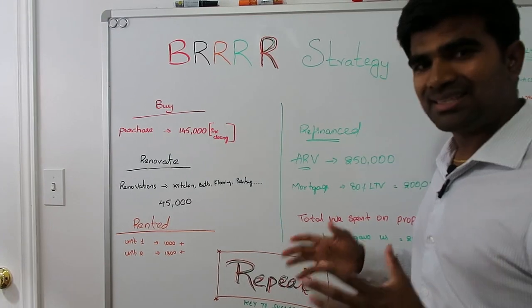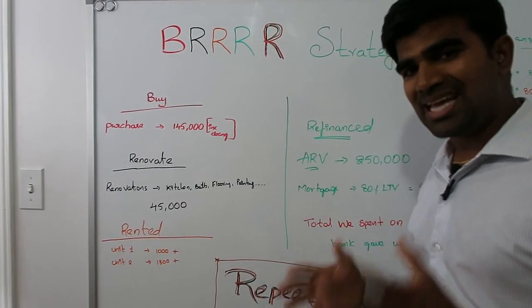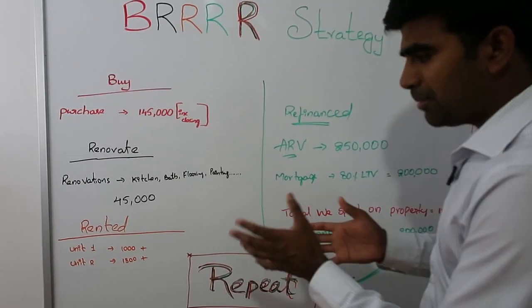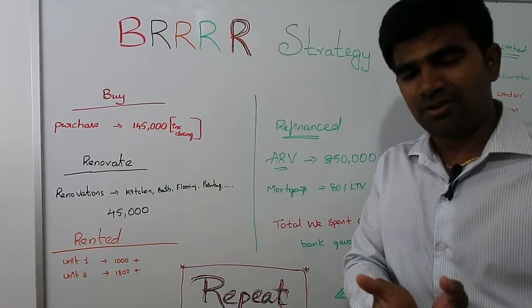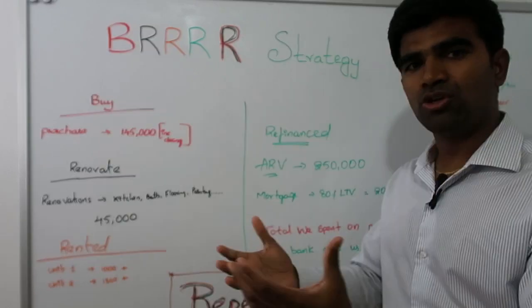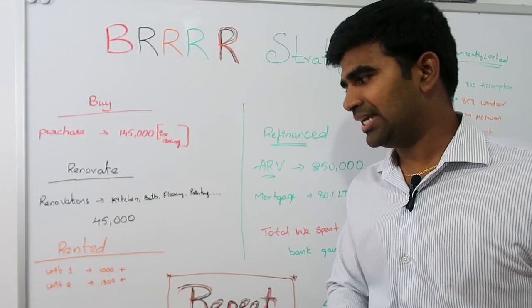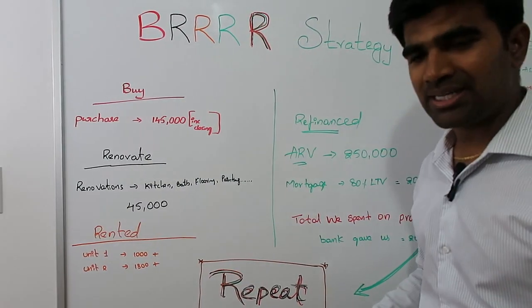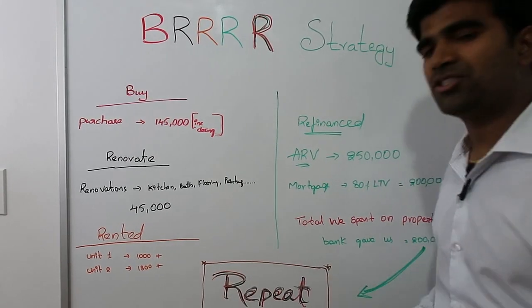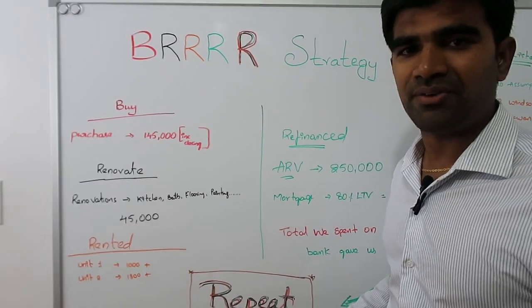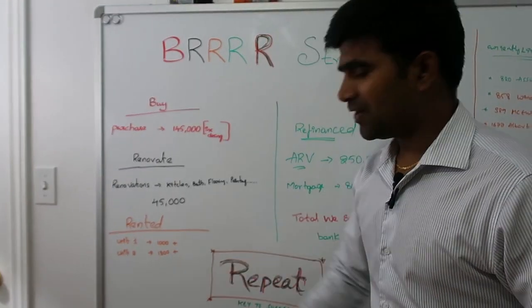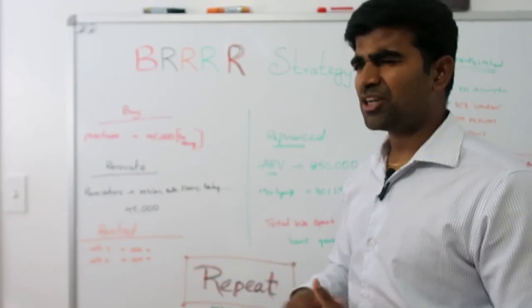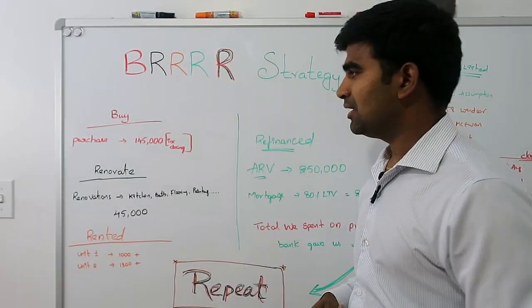Now we rented out, because at this point the property is at its best use. Now I can get top dollar. I added the love and the units are a lot better than previously. I got for the upper unit $1,000 plus utilities, and the main floor $1,300 plus utilities, so $2,300 total.